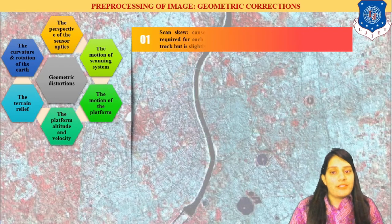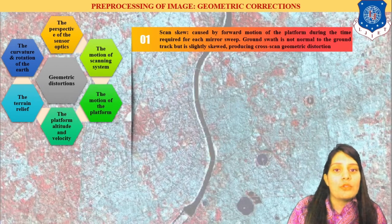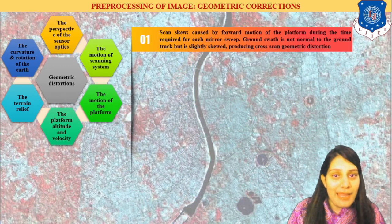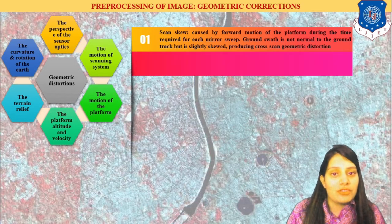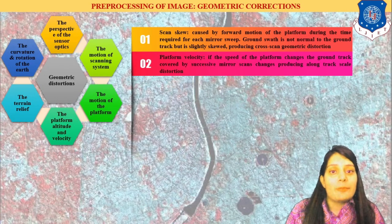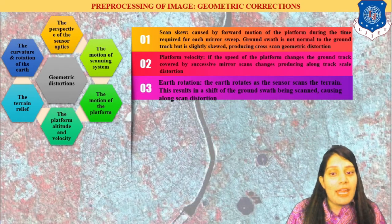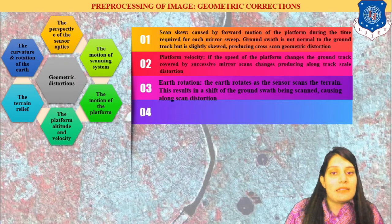The first geometric error is known as skew scan, also called scan skew, which is caused by the forward motion of the platform. If the satellite — the platform on which the sensors are kept — has some error while moving, it will cause distortion in the image. Next is platform velocity: according to the velocity of the satellite the image will change, and errors may occur if the sensor does not properly image the terrain. Then there is earth rotation, where the sensor scans the terrain but encounters a problem because of the rotation speed mismatch.